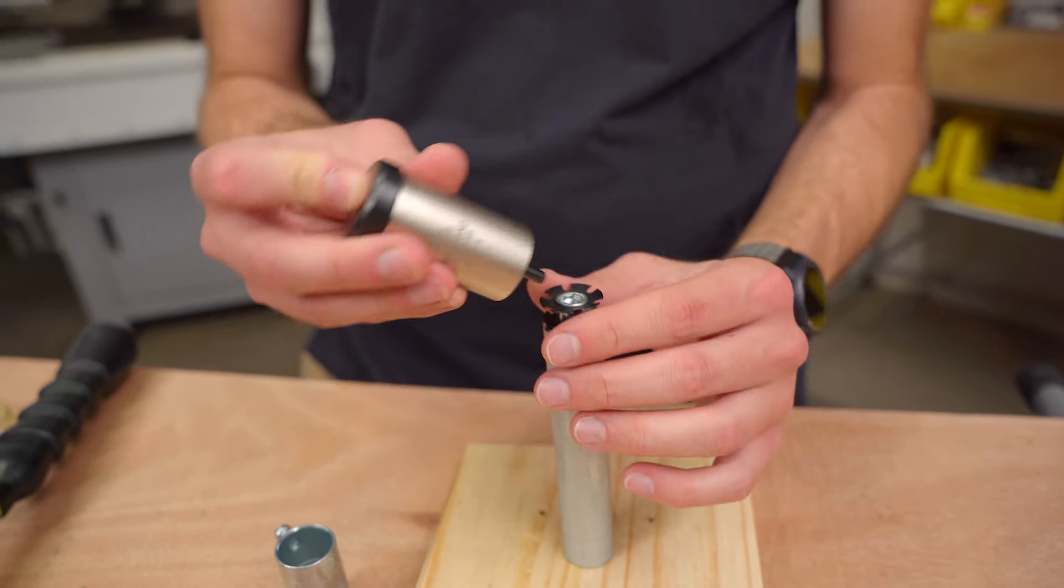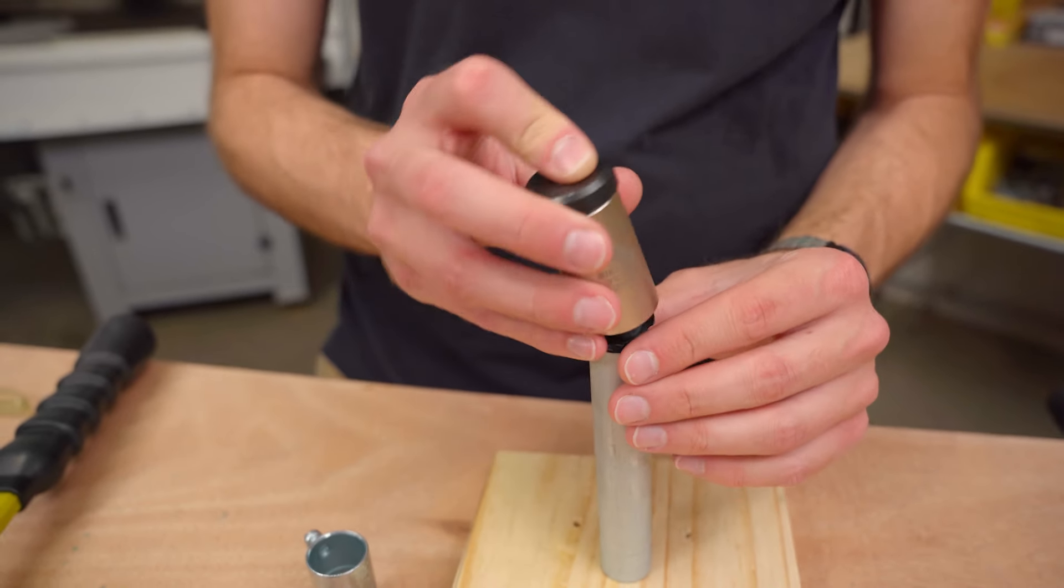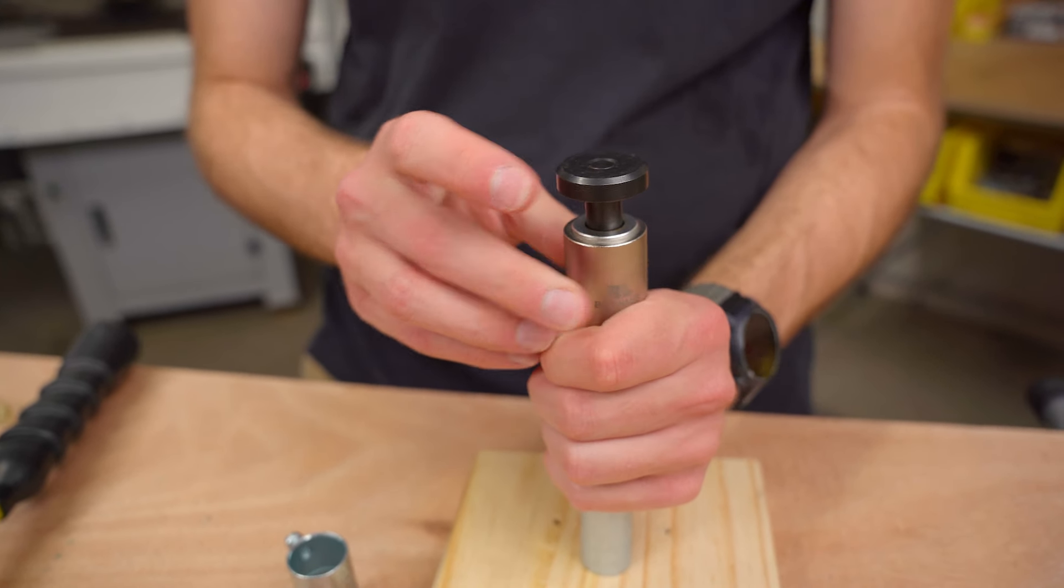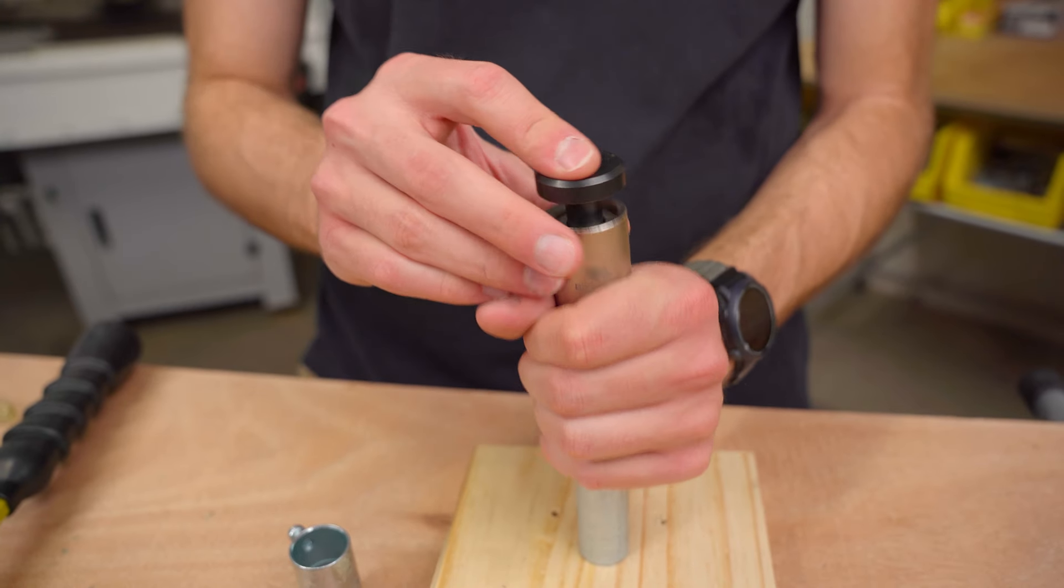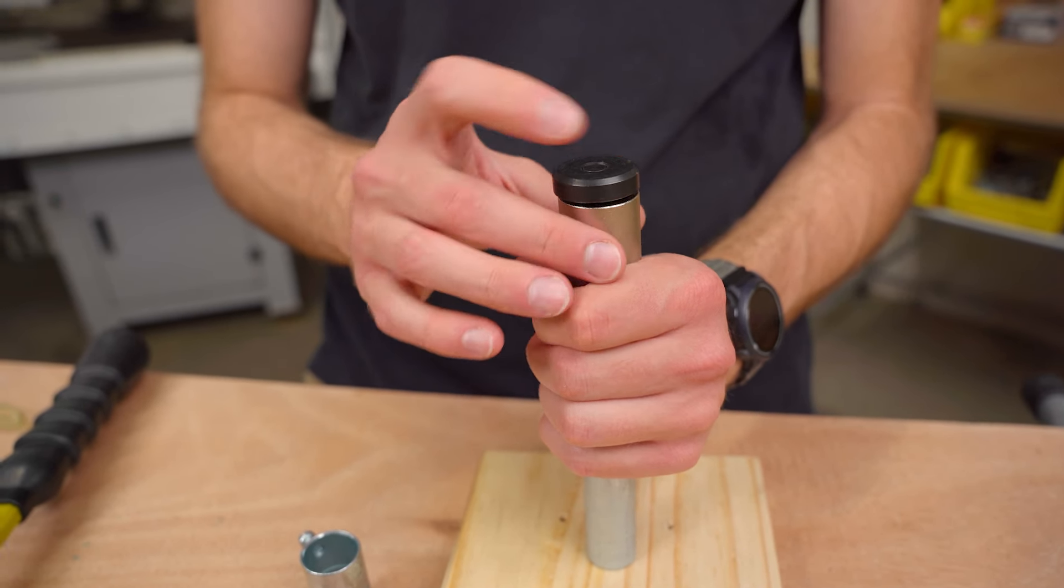And then it has a nipple here that you basically put on the insert and then you hammer that in. And you have this outer sleeve that keeps it from bouncing all over the place. You just hammer this until it's flush with this outer sleeve here.